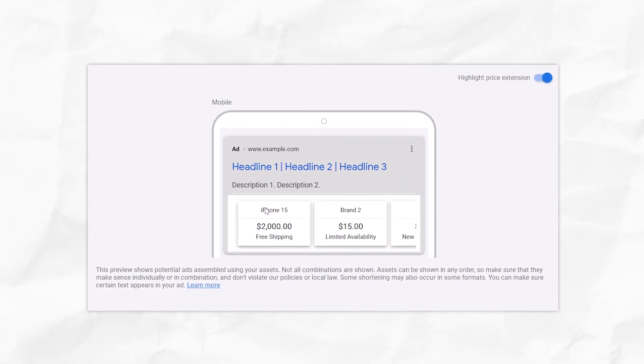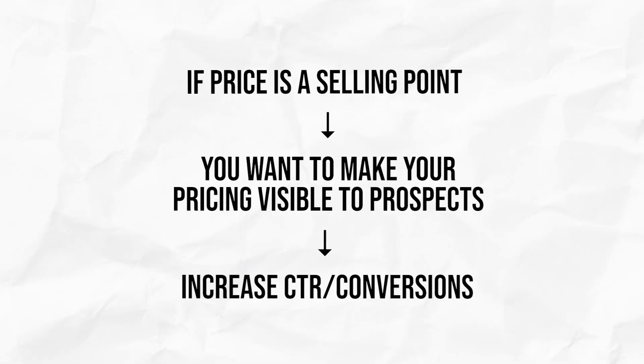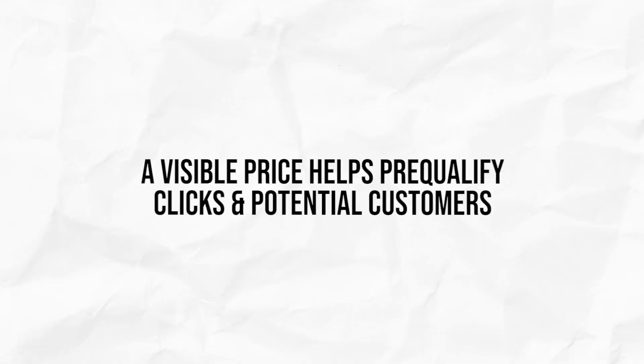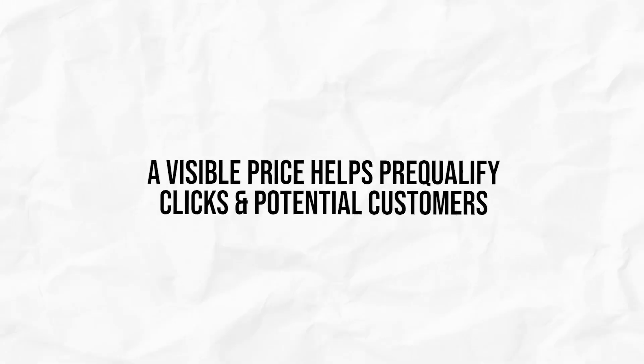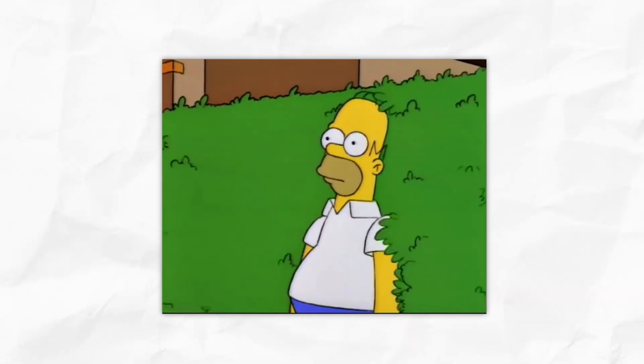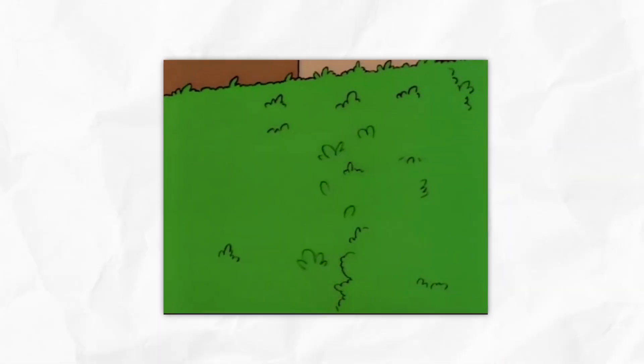Maybe you also have it in your headline in your ad. Having it right there as a price extension is a great idea — it's going to help you get the click, help you get the conversion. But on the other end of things, if you're more expensive within your marketplace and you want to pre-qualify the people that click on your ads and come through to your website, you can do that with a price extension. You can show that your prices are relatively high, and that's going to dissuade people looking for the lower end of the market, making those that do click more likely to convert and save your budget.